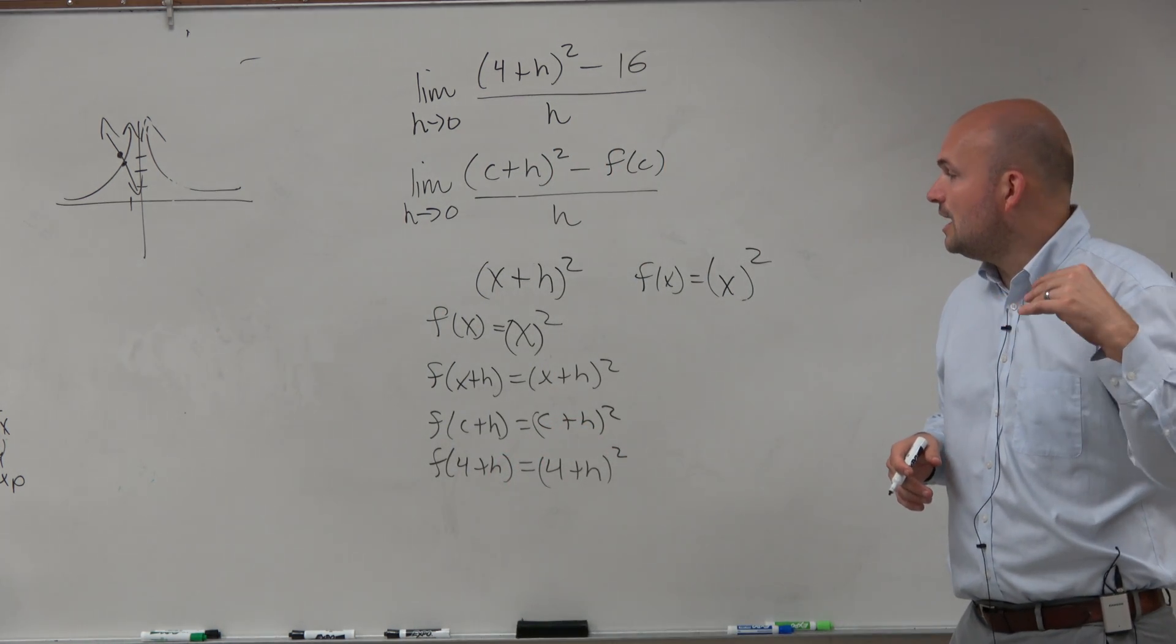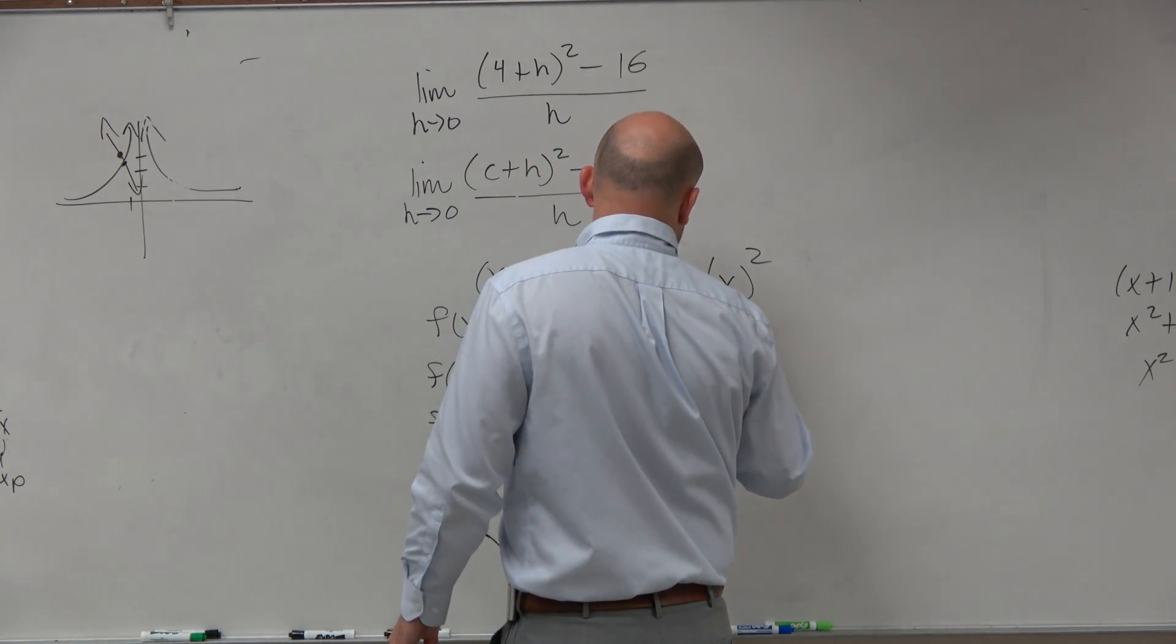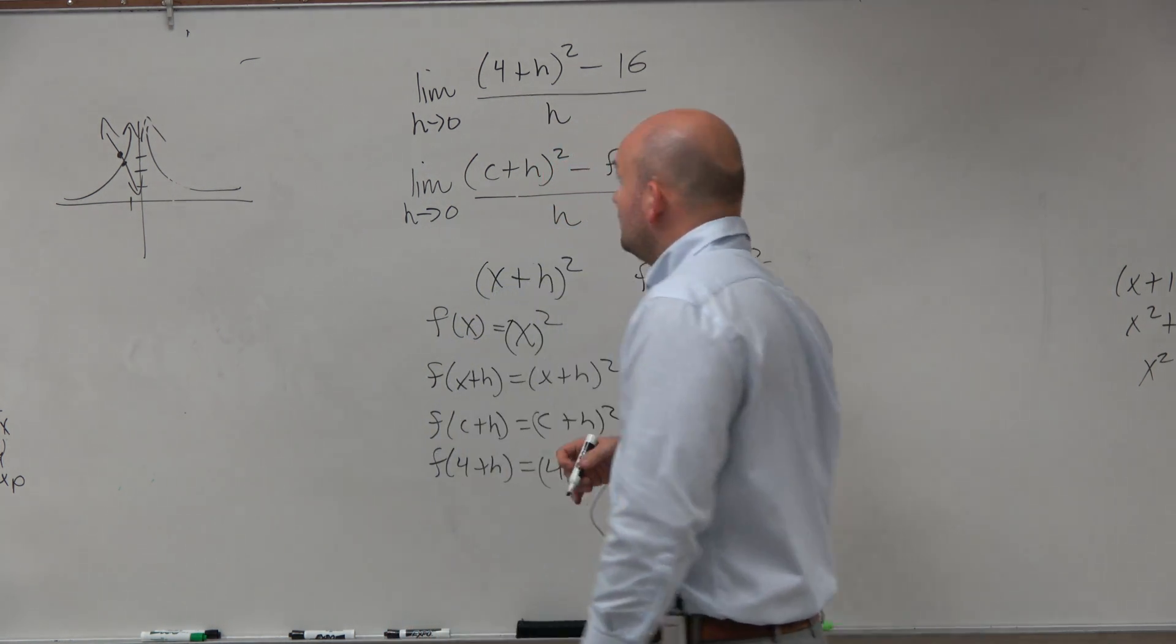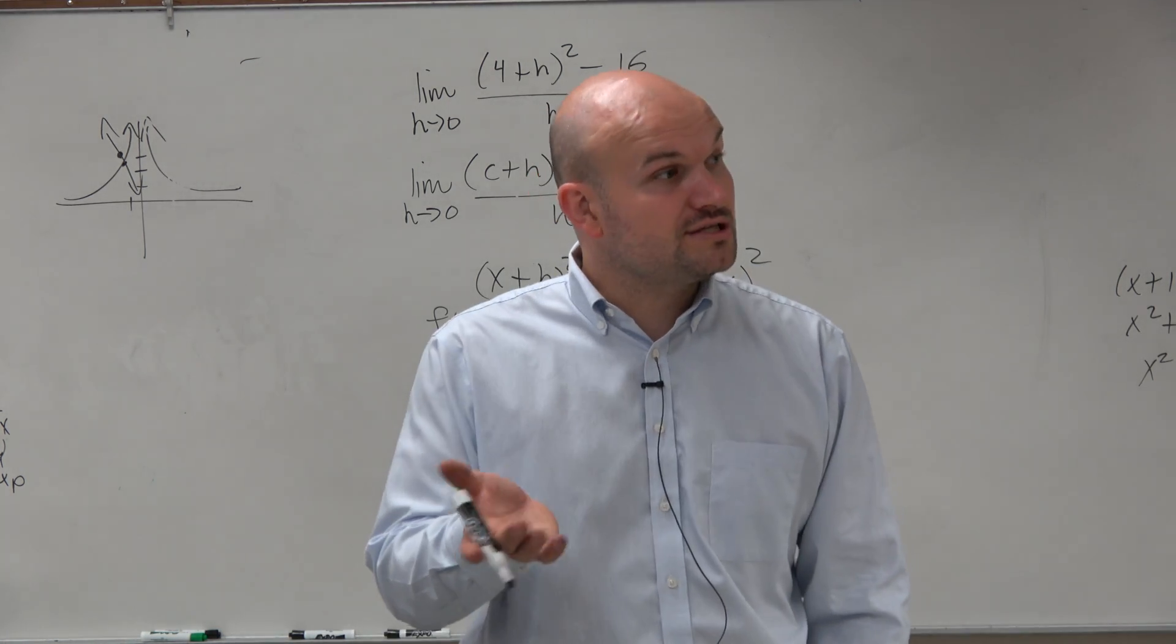Now, let's find the derivative here real quick. F prime of X is equal to 2X squared, or 2X, sorry.